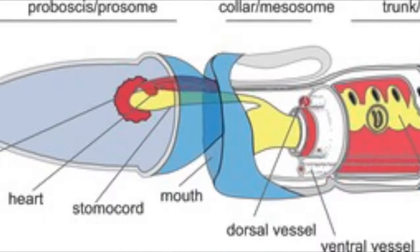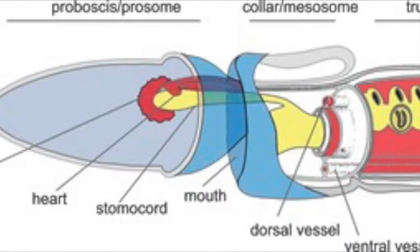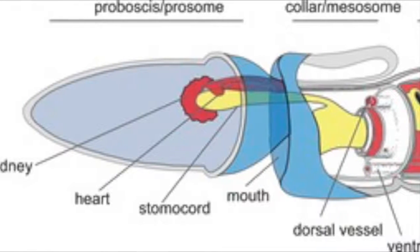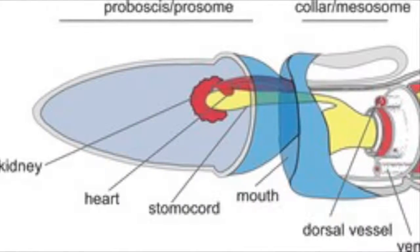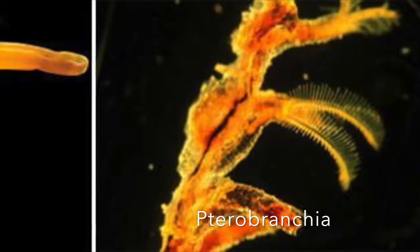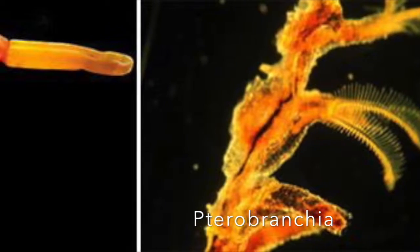Pterobranchia reproduce either asexually or sexually through a brief larval stage and live in interconnected colonies, unlike acorn worms.